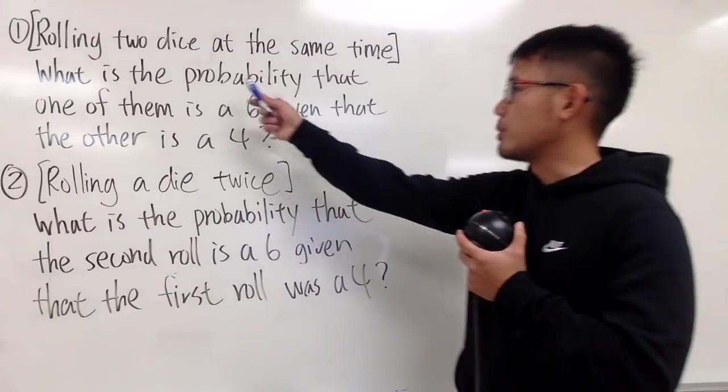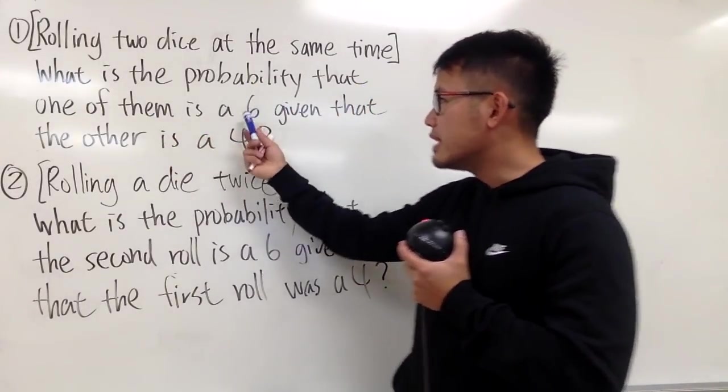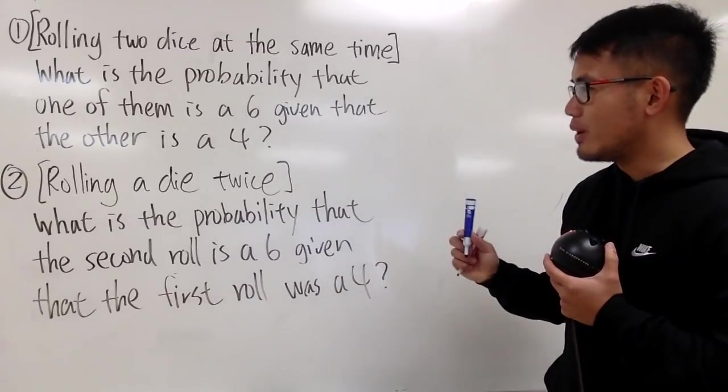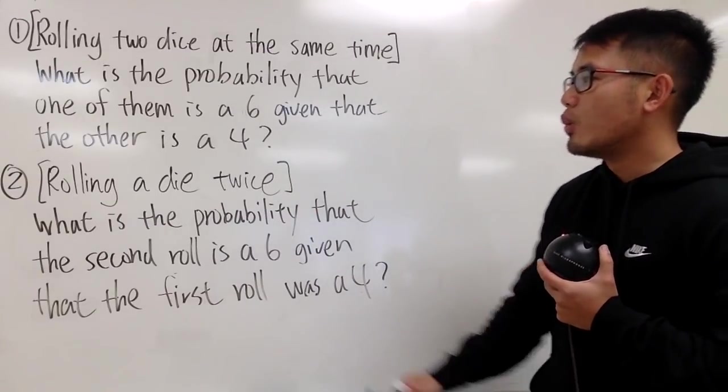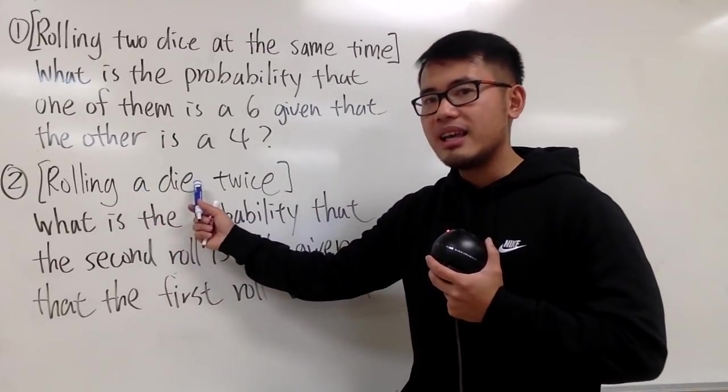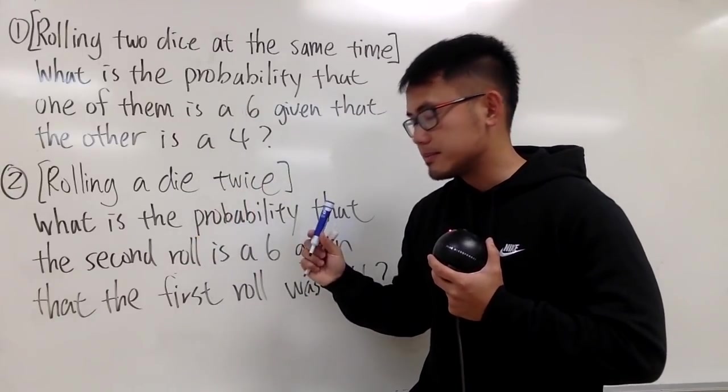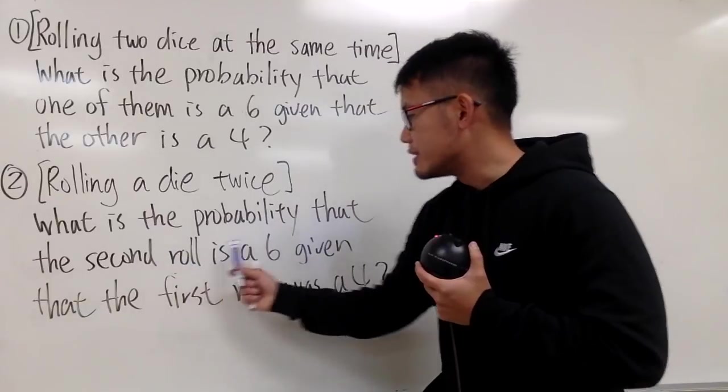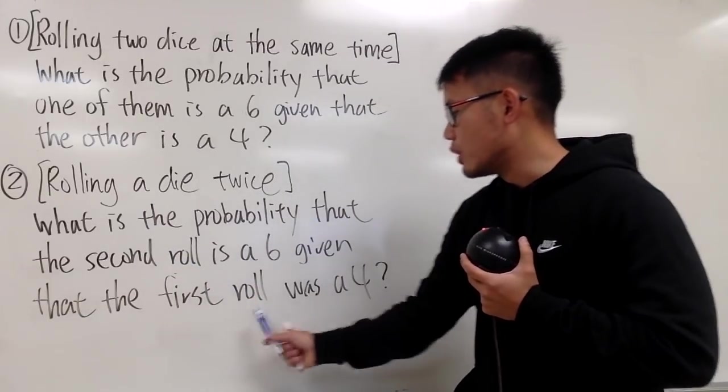Anyway, we are going to find the probability that one of them is a 6, given that the other one is a 4. Well, if you look at the second question, we only have one die, and we are going to roll it twice. And we are going to find the probability that the second roll is a 6, given that the first roll was a 4.